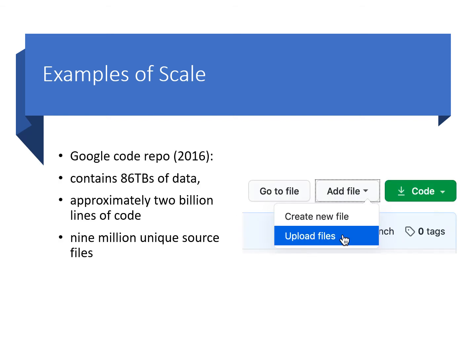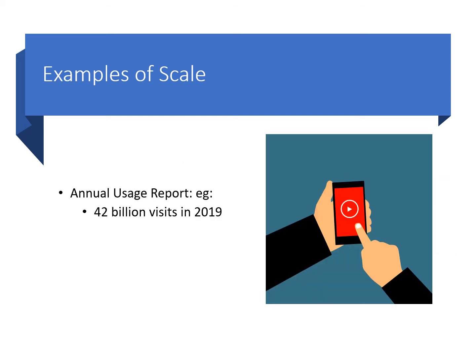In 2016, Google published a paper describing the characteristics of their common code base. Among the many startling facts reported is that the repository contains 86 terabytes of data, including approximately 2 billion lines of code in 9 million unique source files. Remember, this was 2016 — I think things might have grown since then. Real concrete data on the scale of services provided by major internet sites remains shrouded in commercial confidence secrecy. Luckily, we can get some deep insights into the request and data volumes handled at internet scale through the annual usage report from one tech company — it's a fascinating glimpse into the capabilities of massive-scale systems.